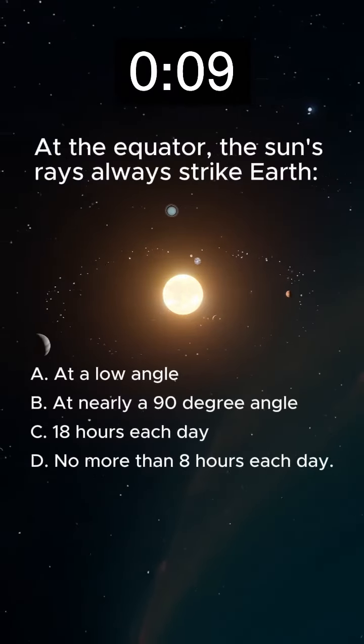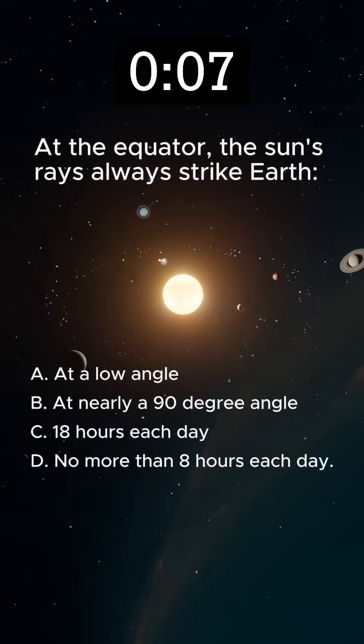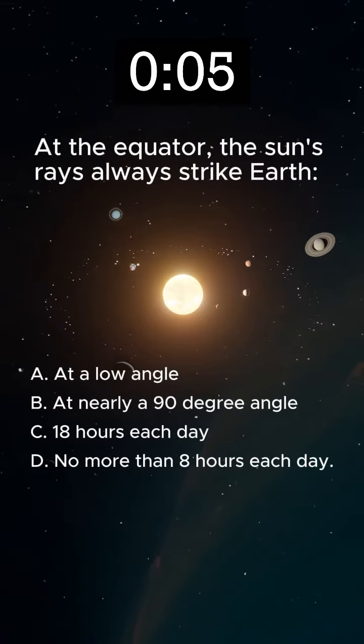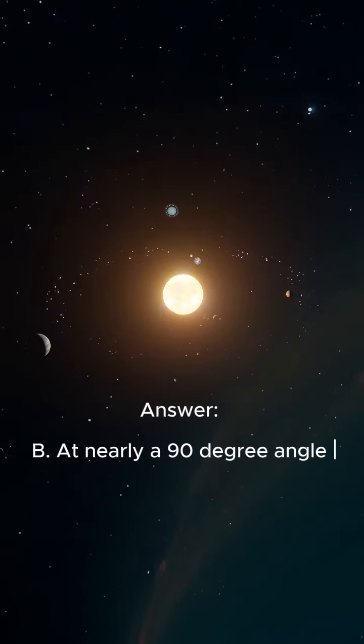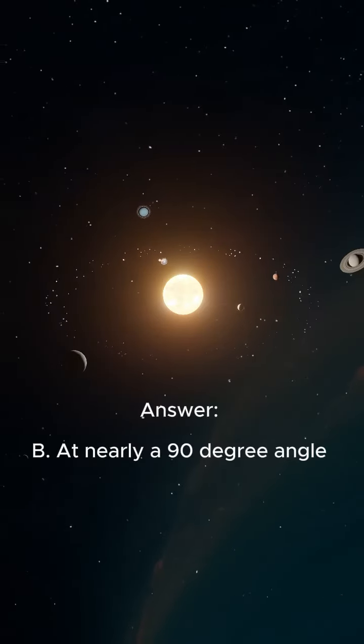At the equator, the sun's rays always strike Earth. Answer: B, at nearly a 90 degree angle.